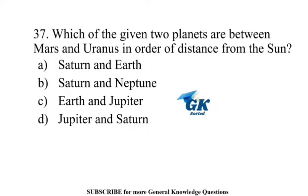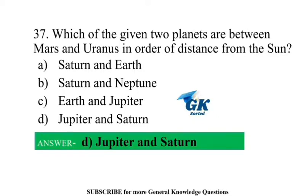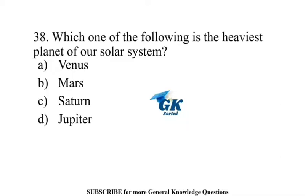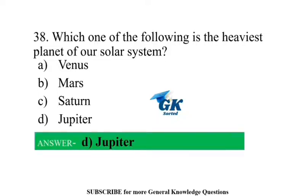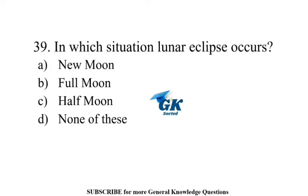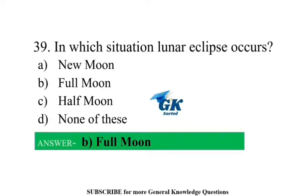Which of the given two planets are between Mars and Uranus in order of distance from the sun? Jupiter and Saturn. Which one of the following is the heaviest planet of our solar system? Jupiter. In which situation does a lunar eclipse occur? Full moon.